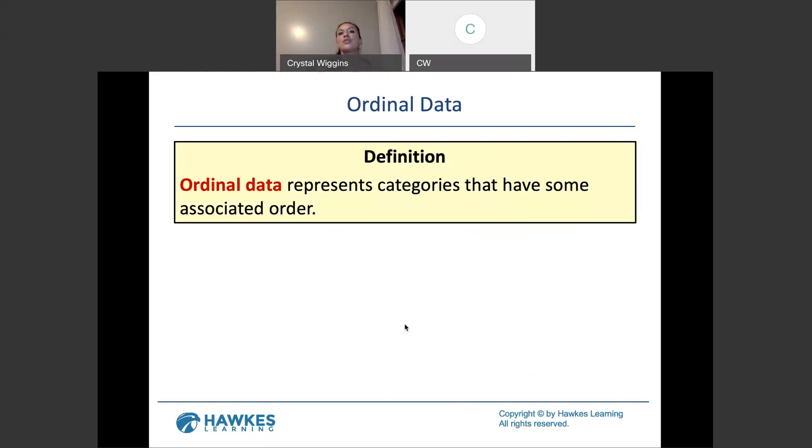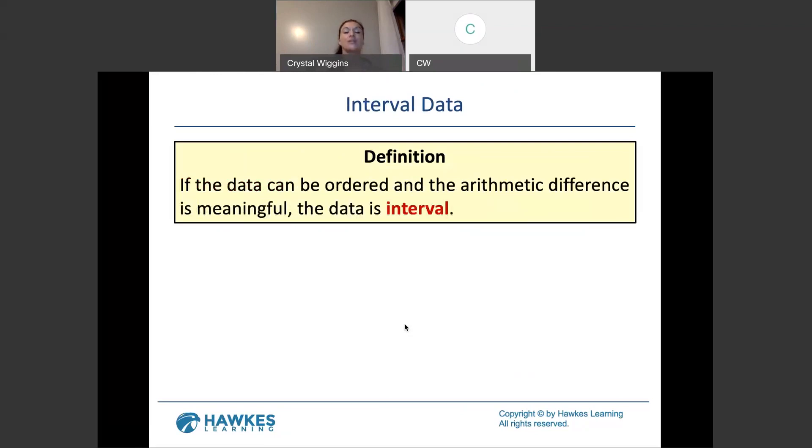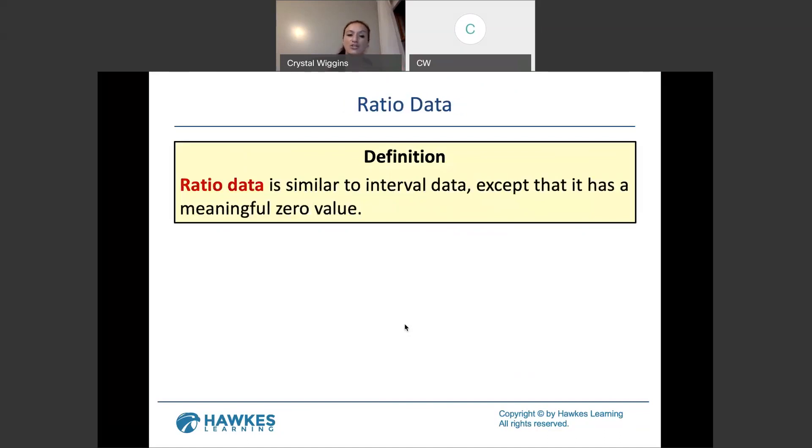Math comes into play once we get to the third and the fourth level. Our third level is interval measurement. Interval measure of data is numerical. We are talking about numbers now. Arithmetic can be done on this level of measurement, and the same can be said about the fourth. I'm going to do these at the same time because there's a very slight difference between the two. Ratio is the fourth level of measurement. The really only difference between interval and ratio, because they're all numbers, and it has to do with the zero.